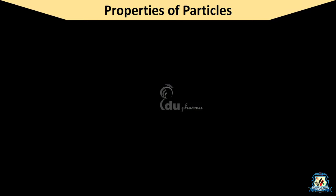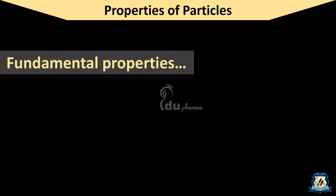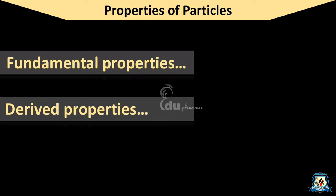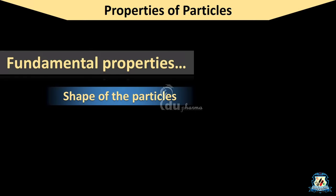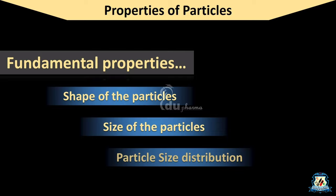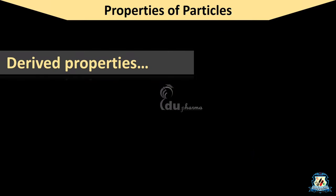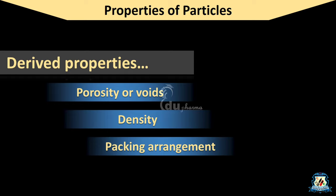Let's talk about the properties of particles, or how particles can be characterized. Properties of particles can be classified as primary or fundamental properties, and secondary or derived properties. Fundamental properties include shape of the particles, size of the particles, and particle size distribution, while derived properties are porosity or voids, density, packing arrangement, flow properties, etc.